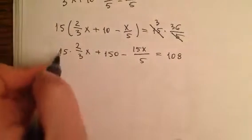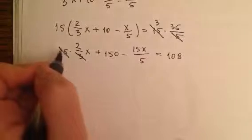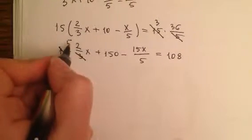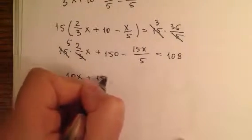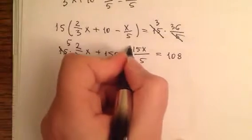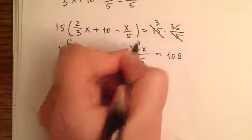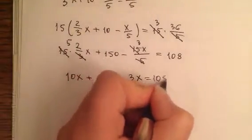Here I can divide it a little bit by three. Here I have one, here I have five. So five times two is ten x plus one hundred fifty minus fifteen divided by five gives me three, minus three x equals one hundred eight.